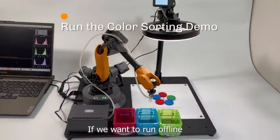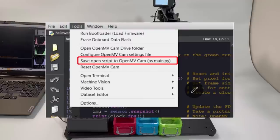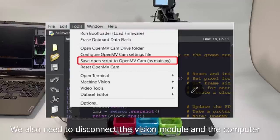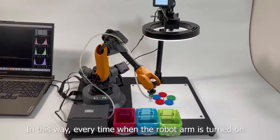If we want to run offline, we can save the script to the Vision module in OpenMV. We also need to disconnect the Vision module and the computer. In this way, every time when the robot arm is turned on, the Vision module will start color sorting.